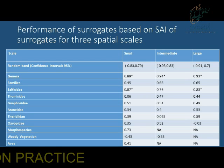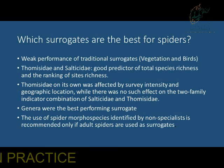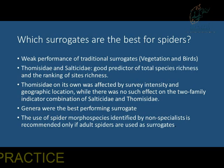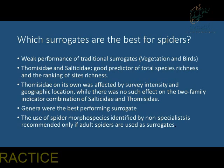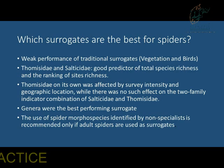In summary: traditional surrogates — vegetation and birds — which are typically used in conservation planning, don't work very well for spiders. Thomisidae and Salticidae together are a good predictor of total species richness and ranking of site richness. Thomisidae on its own was affected by survey intensity and geographic location, while there was no such effect for the two-family indicator combination. Genera were the best-performing surrogate. We also assessed spider morphospecies, which performed better than random, but the relationship with species richness wasn't as strong.